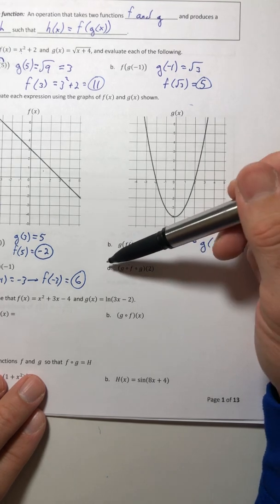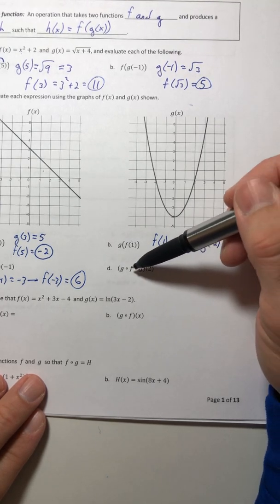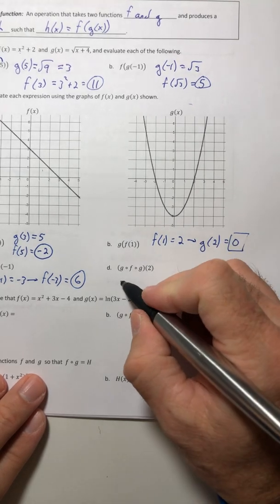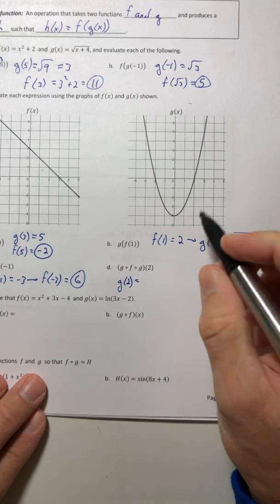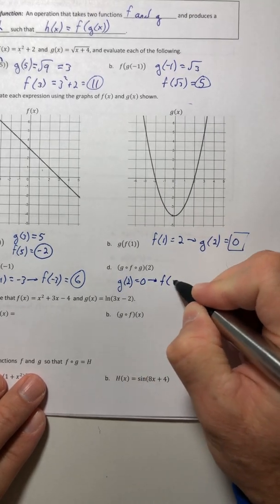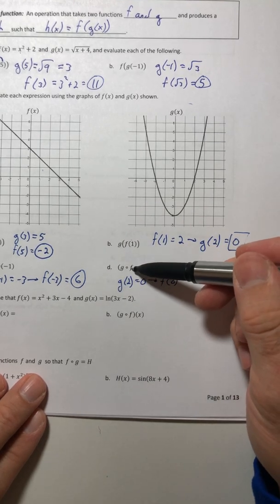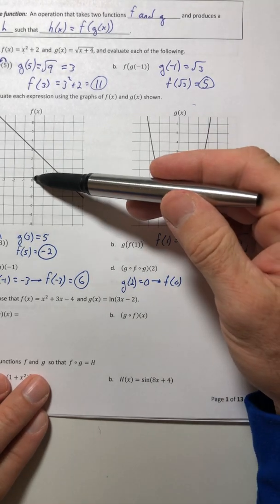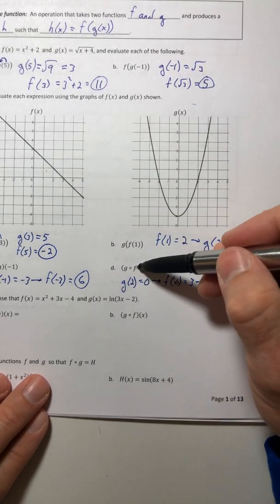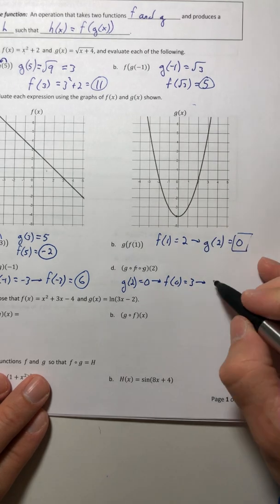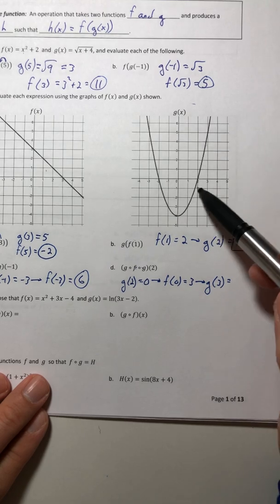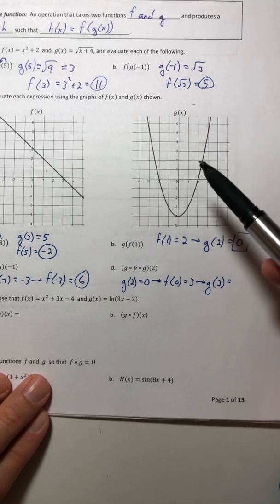Example d, you work your way from left to right. So the two goes into g, which was zero. Take the zero and plug it into the next function to the left, which is f. So f(0) is 3. Then stick it into the next function on the left, which is g. So g(3) equals five.